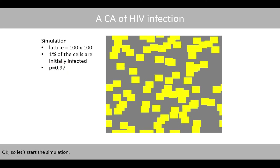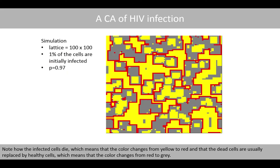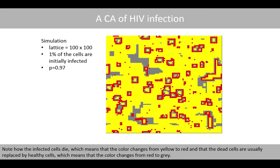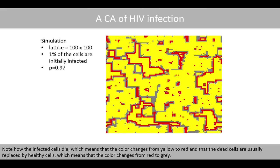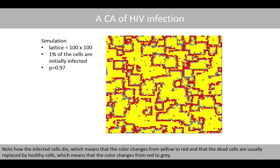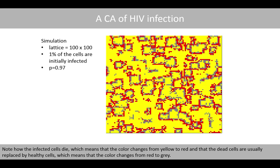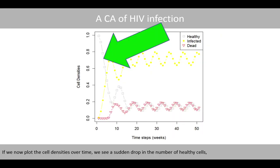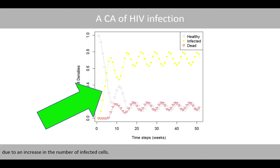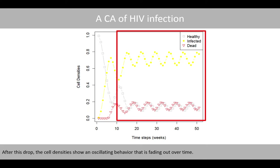Let's start the simulation. Note how the infected cells die, meaning the color changes from yellow to red, and that the dead cells are usually replaced by healthy cells, changing from red to gray. If we plot the cell densities over time, we see a sudden drop in the number of healthy cells due to an increased number of infected cells. After this drop, the cell densities show an oscillating behavior that fades out over time.